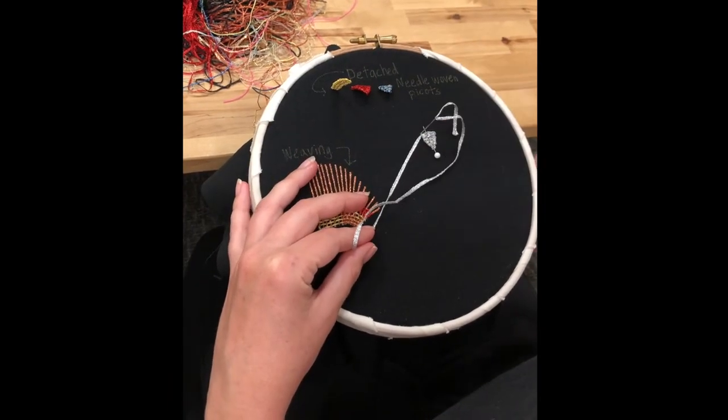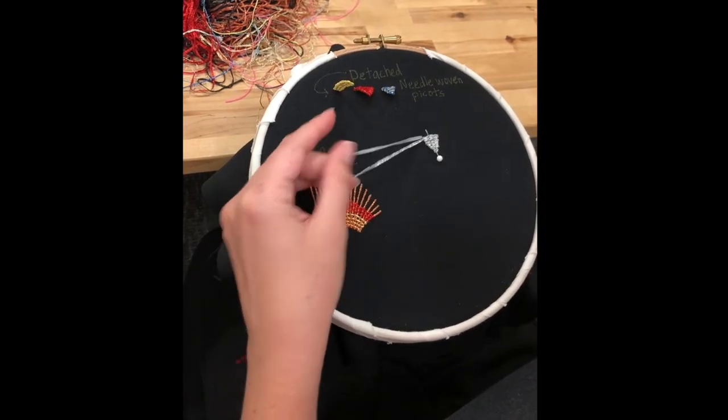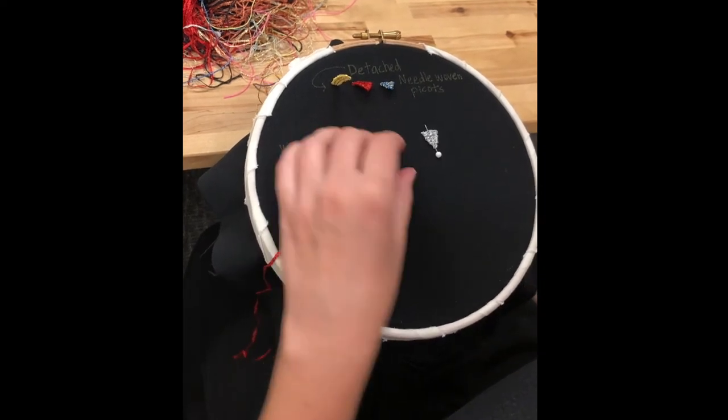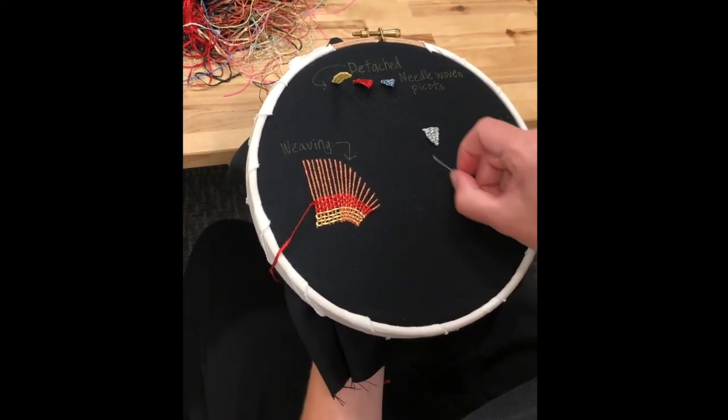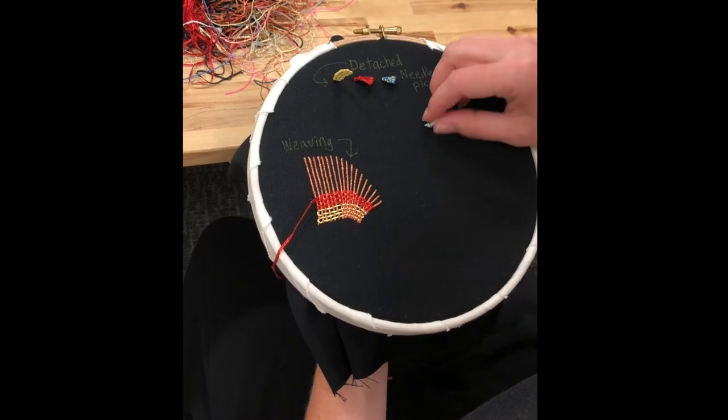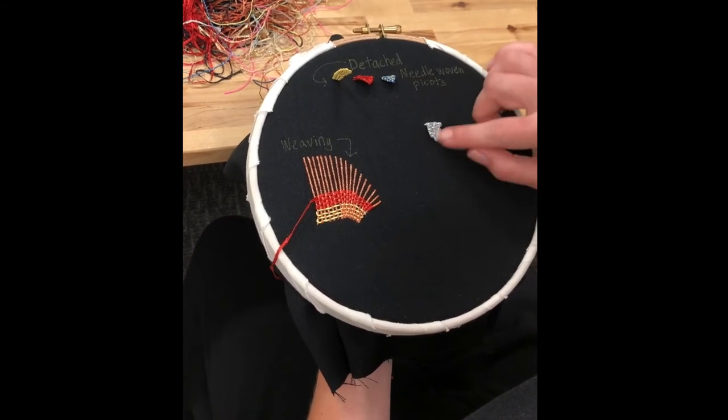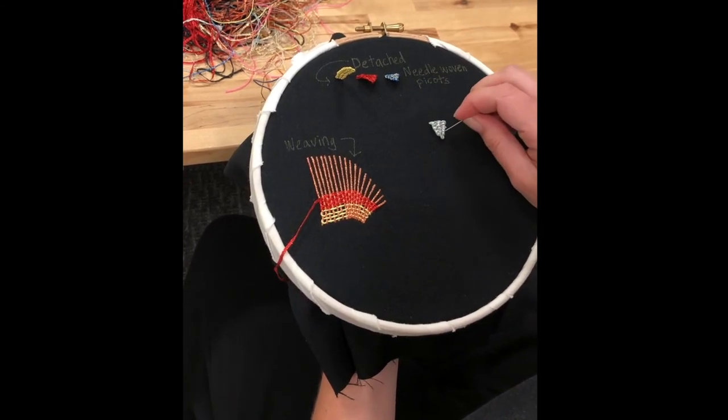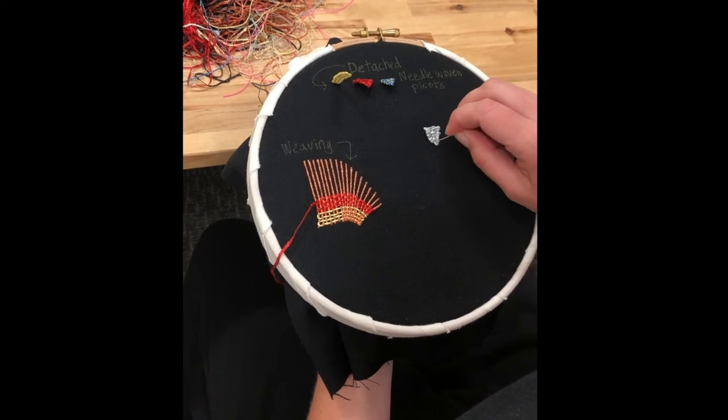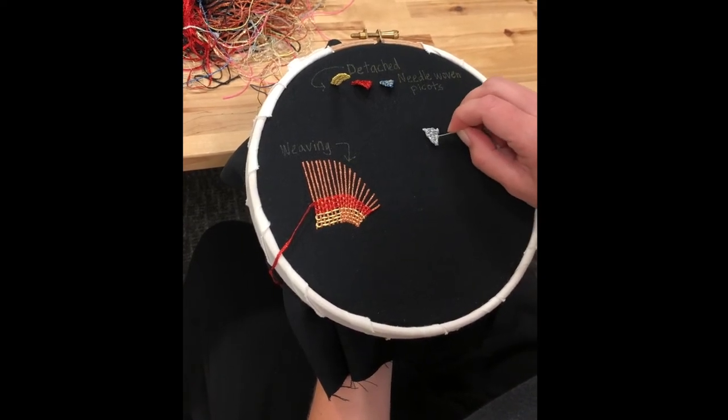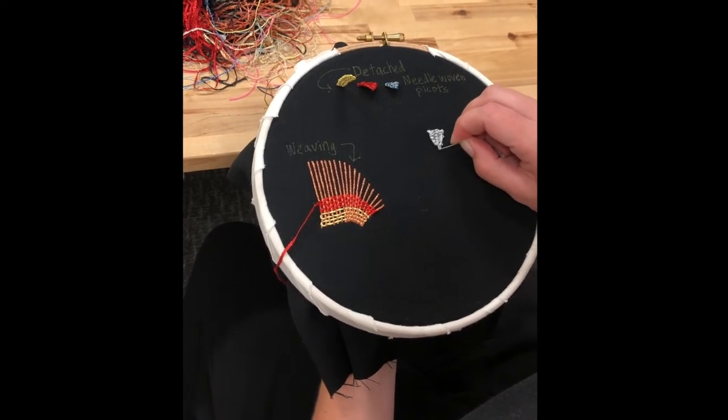So bring my needle down here, and then I'm just going to pull the pin out, and here I've got my nice little woven picot. And you can adjust here and make this a little bit, change the shape however you want.